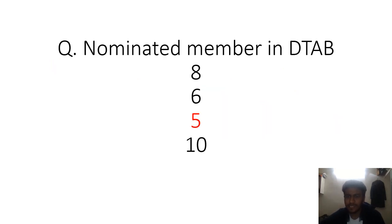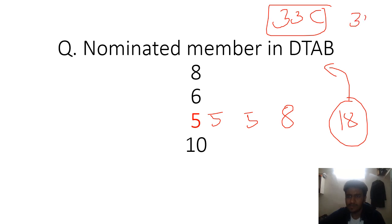Name the members of Drug Technical Advisory Board. Five nominated, five elected, and eight ex-officio - eighteen members total in DTAB. Let me know that according to Ayurveda, 33C is DTAB and 33D is DCC. Just let me know in the comment section how many of you know this concept. So the answer was five nominated members.